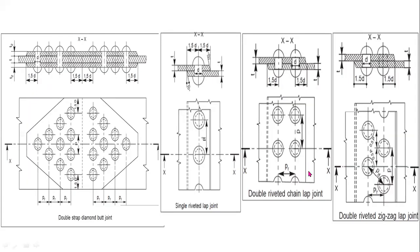There are two types of riveted joints depending upon the way in which the plates are connected: lap joints and butt joints. A lap joint is that in which one plate overlaps the other and the two plates are then riveted together.